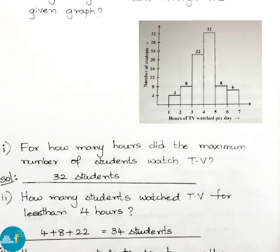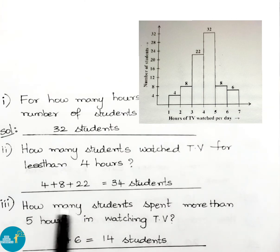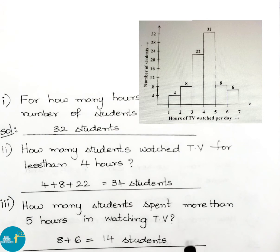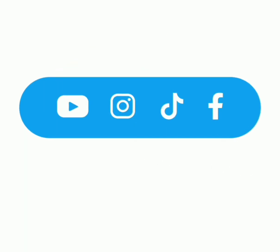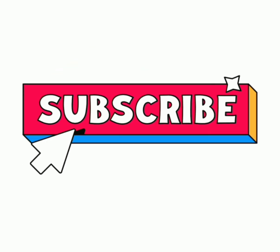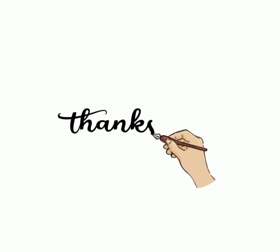Question 3: how many students spent more than 5 hours watching TV? From the graph, 8 + 6 = 14 students watched TV for more than 5 hours. Today we have completed Class 8, Chapter 5, Data Handling, Exercise 5.1, all sums. Hope you all liked this video — please like, share with your friends, and subscribe to our channel. Thank you for watching.